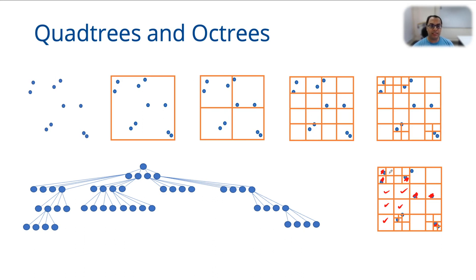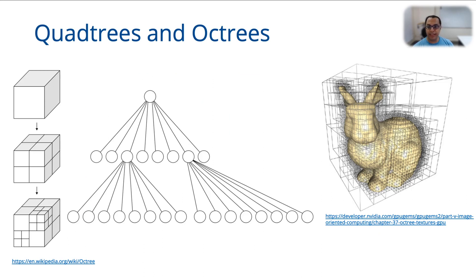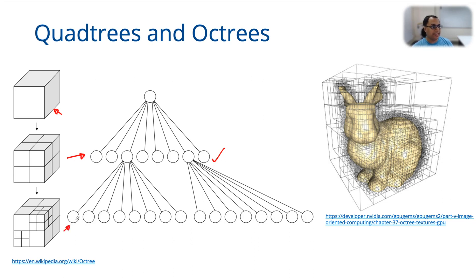How does this generalize to 3D? In 3D, instead of a quadtree with four children for every parent node, you have eight children for every parent node. You start with a bounding box in 3D and then subdivide along every axial plane to give the corresponding level of the octtree, and you proceed exactly like the quadtree to build the octtree around a 3D object.